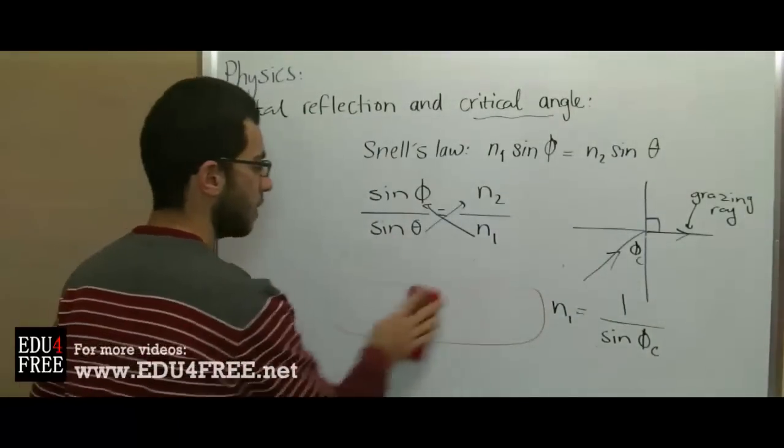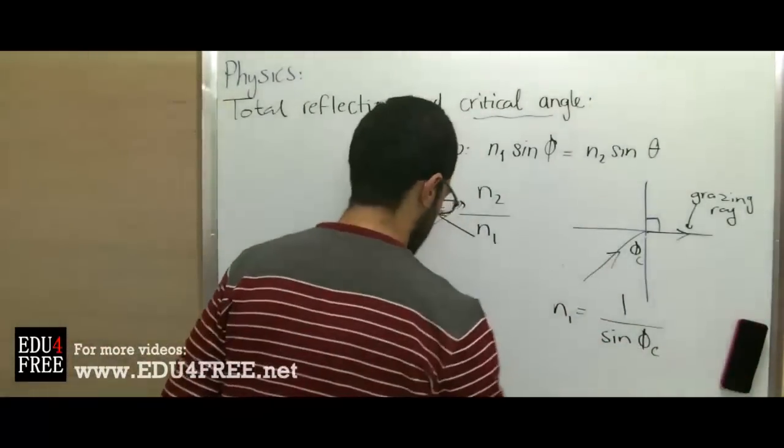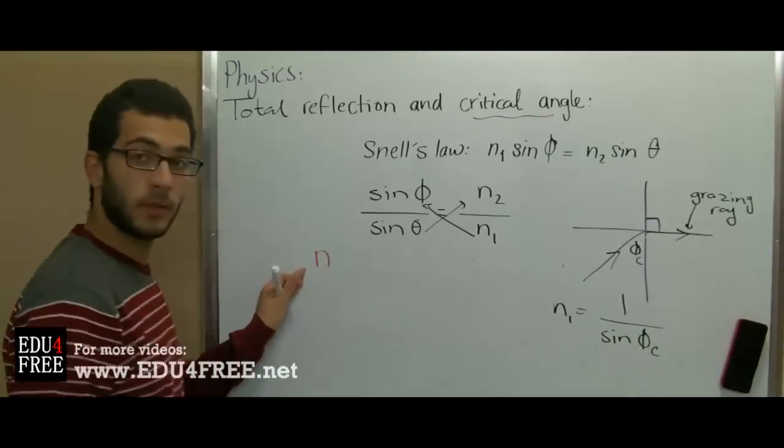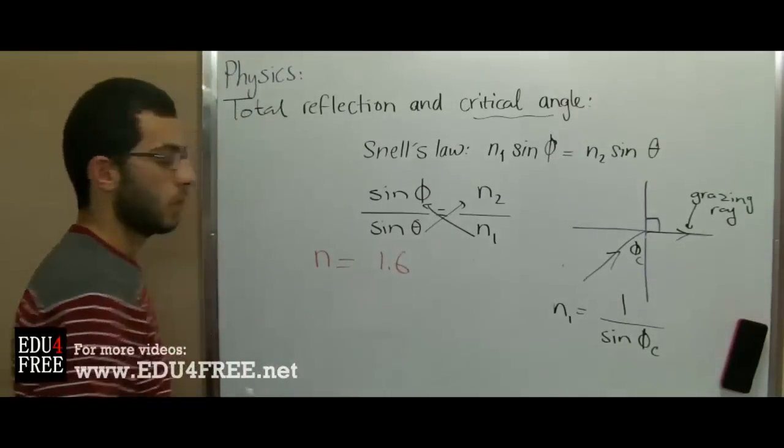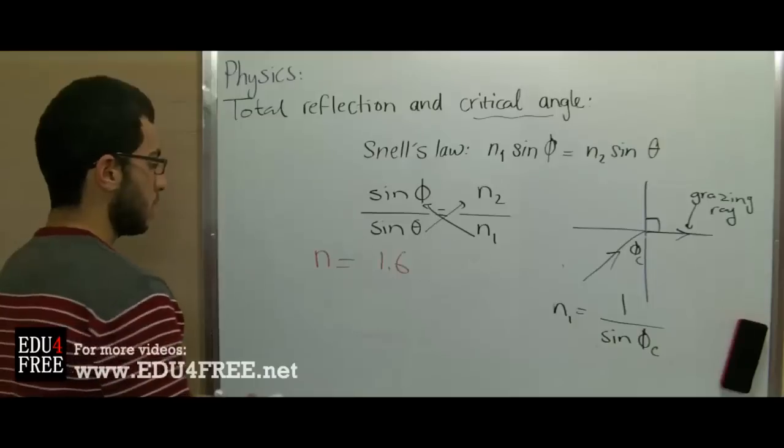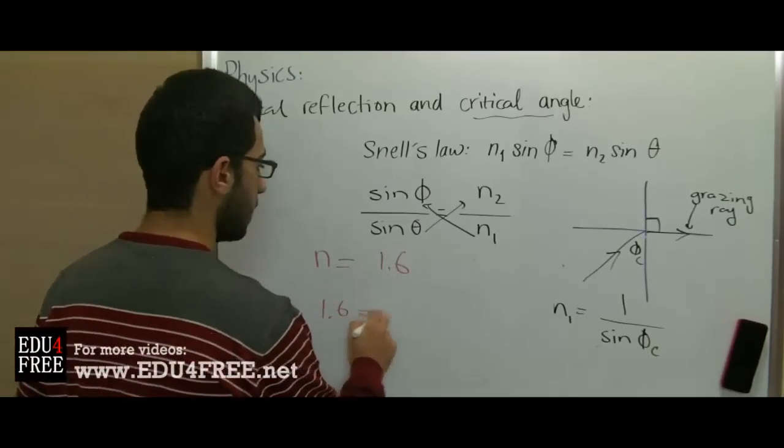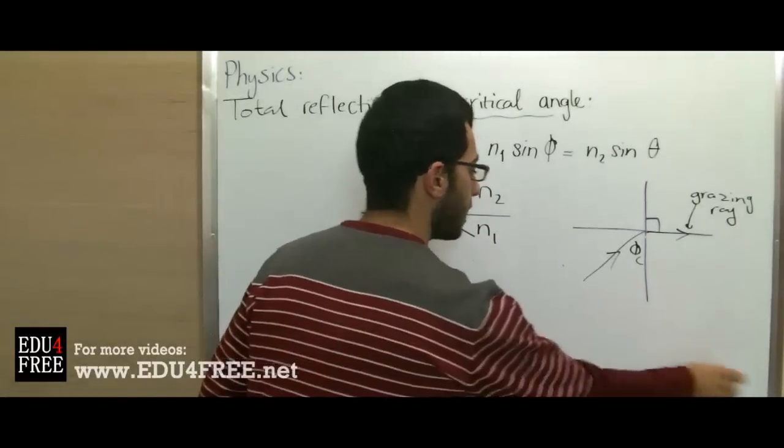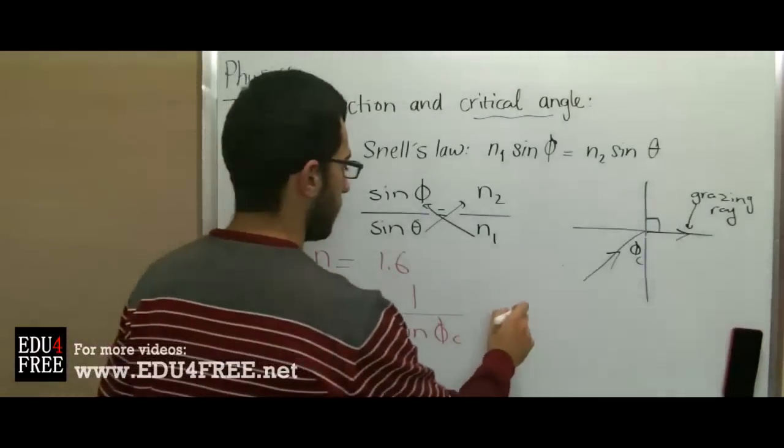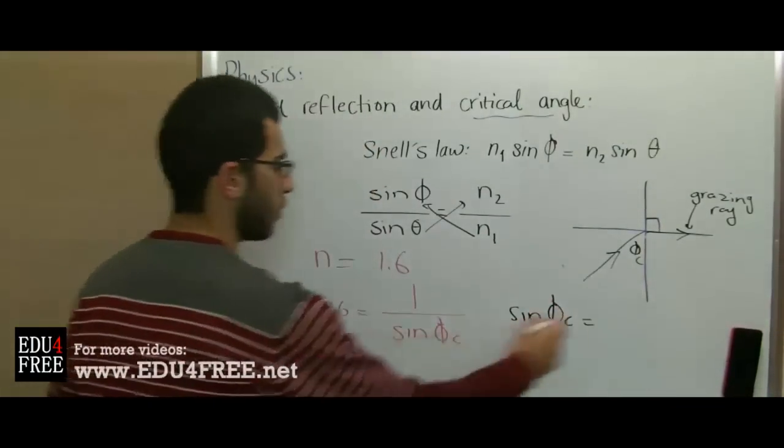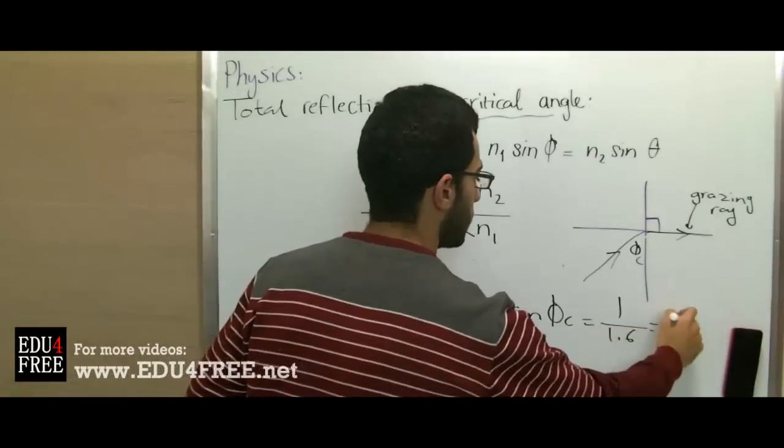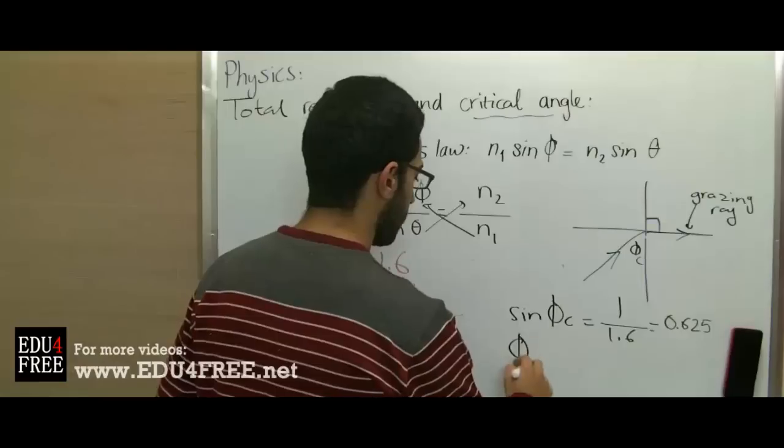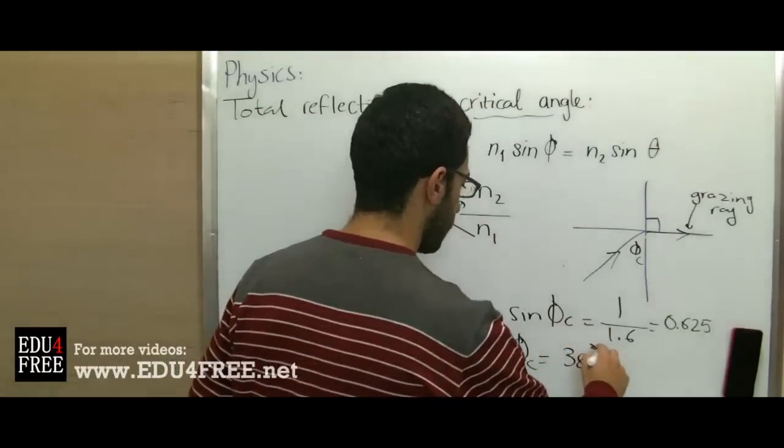For an example, if the refractive index of some kind of glass is 1.6, we want to find the critical angle. So 1.6 equals 1 over sine φc. Accordingly, sine φc equals 1 over 1.6, which gives us 0.625. Using a calculator, we find that the critical angle equals 38 degrees 41 minutes.